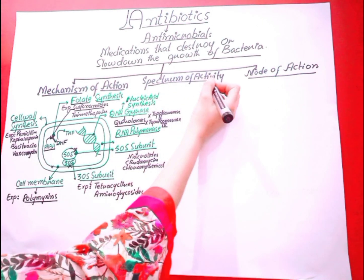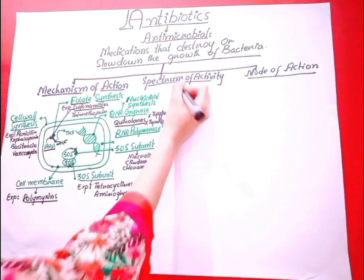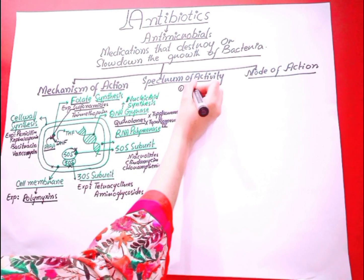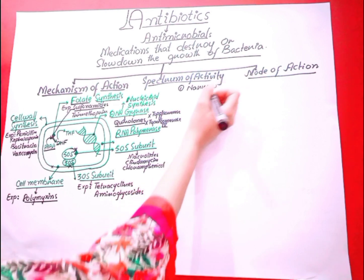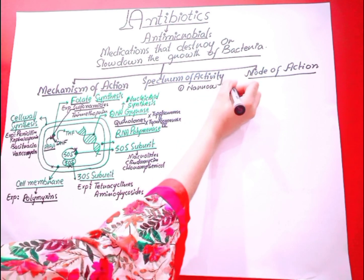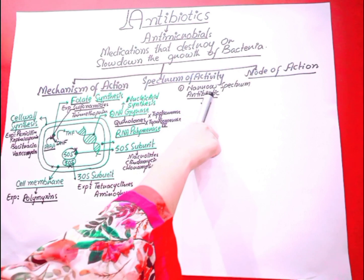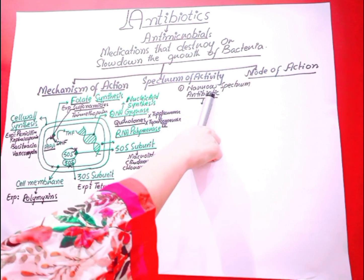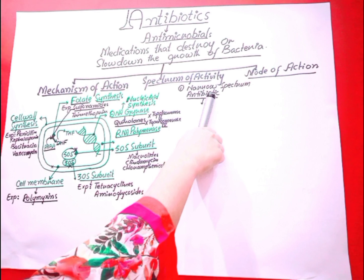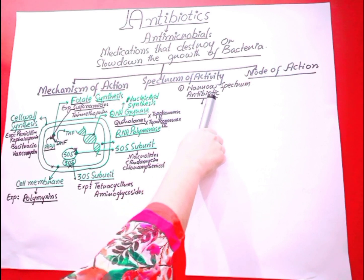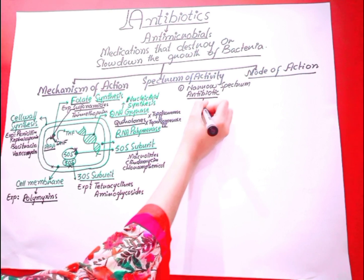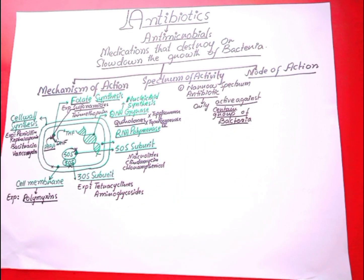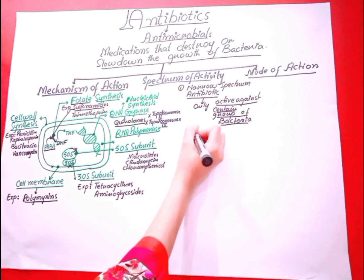On the basis of spectrum of activity, there are two classes: narrow spectrum and broad spectrum antibiotics. Narrow spectrum antibiotics work only against a certain group of bacteria and do not work for a large group. Examples of narrow spectrum antibiotics are macrolides and vancomycin.